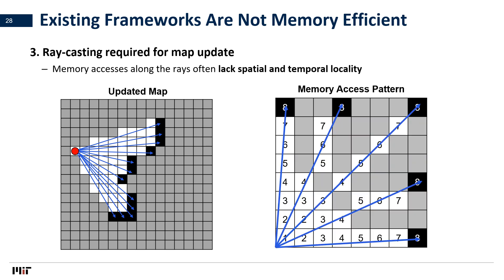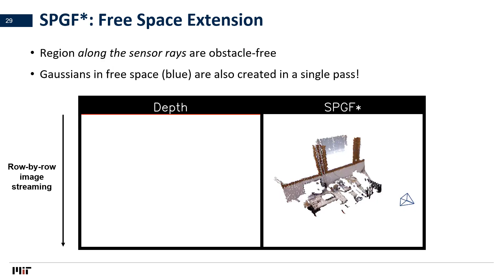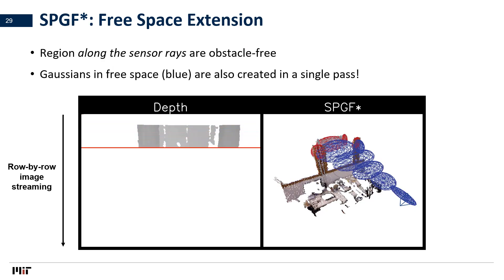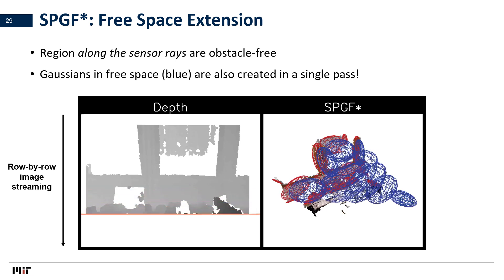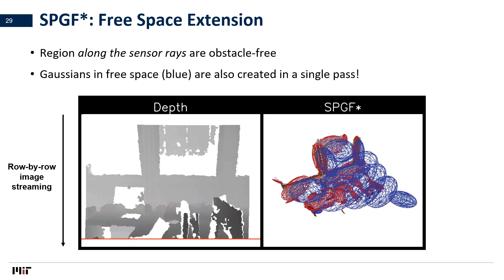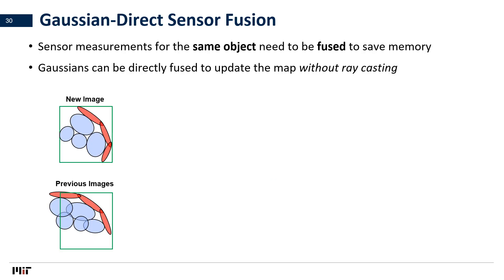To see this, consider the memory access pattern shown on the right side, where the numbers represent the order of memory access along each ray. Notice that within each ray, the consecutive numbers often occur on different rows or columns of the map. If the cells in each column or row of the map are stored in consecutive addresses in DRAM, this memory access pattern lacks spatial or temporal locality. To avoid casting each individual ray separately, we first bundle the rays using Gaussians. In particular, we extend our SPGF algorithm to SPGF* in order to create blue Gaussians for compactly representing the free space along the sensor rays, also in a single pass.